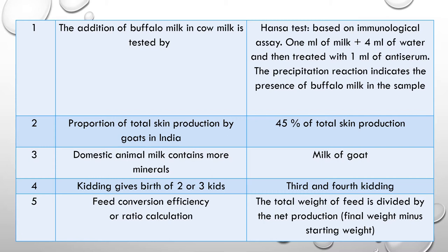Question 5: Feed conversion efficiency or ratio — how is it calculated? The total weight of feed is divided by the net production. Net production is derived as final weight minus starting weight — the difference in weight. This ratio yields the feed conversion efficiency.